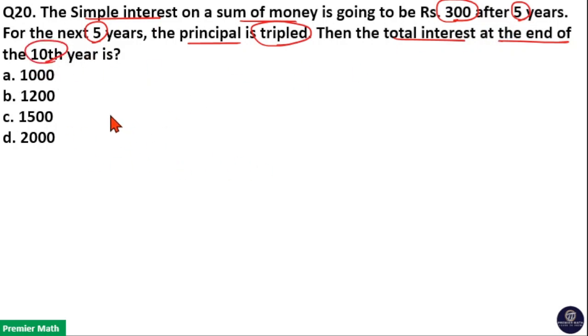Here number of years and rate are same. For the first 5 years, simple interest is Rs. 300. And for the next 5 years, principal is tripled.